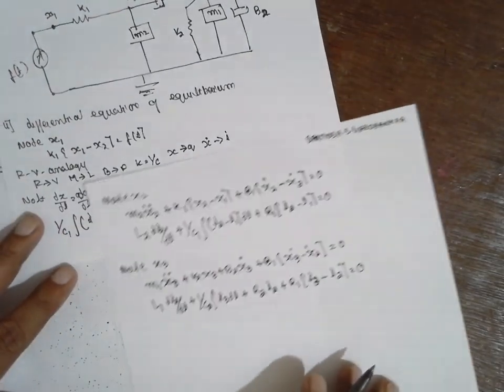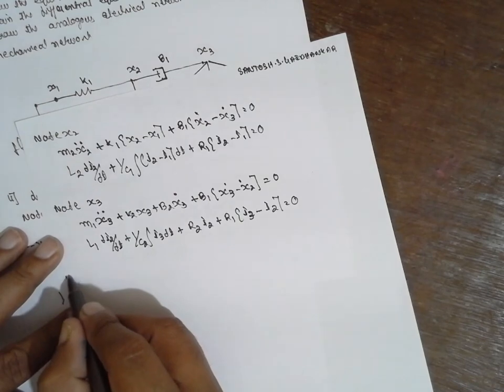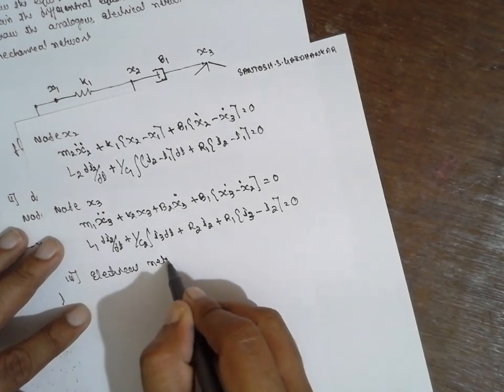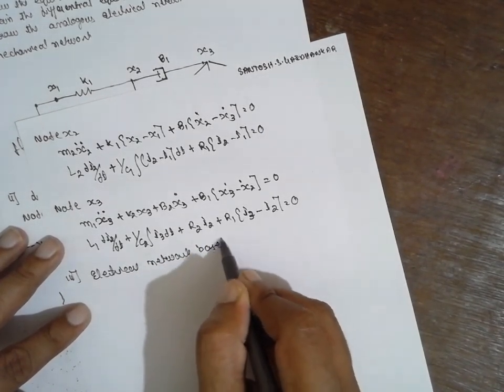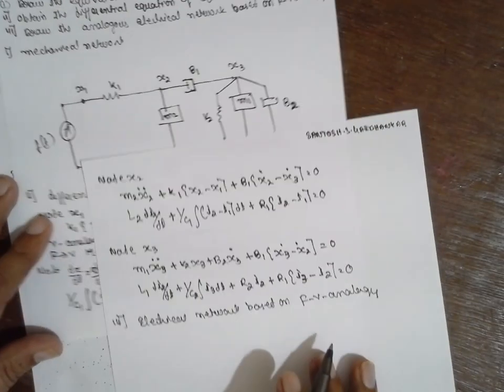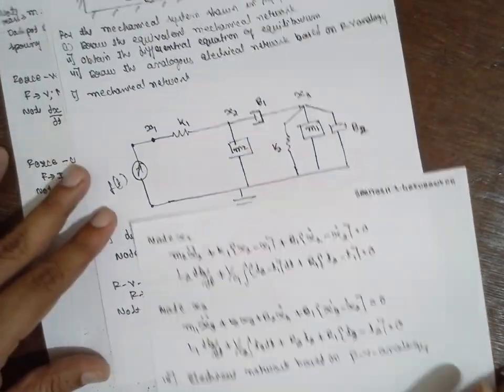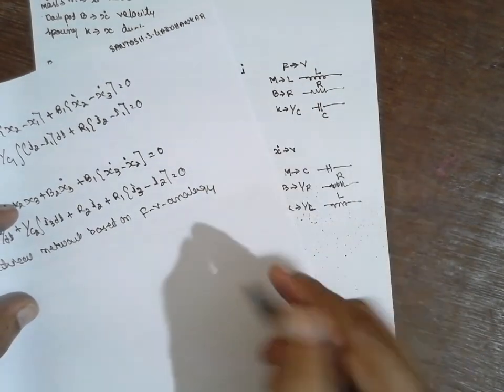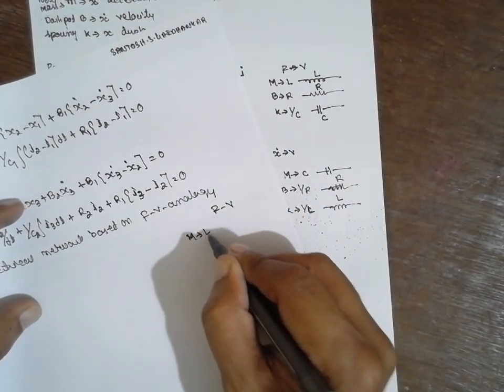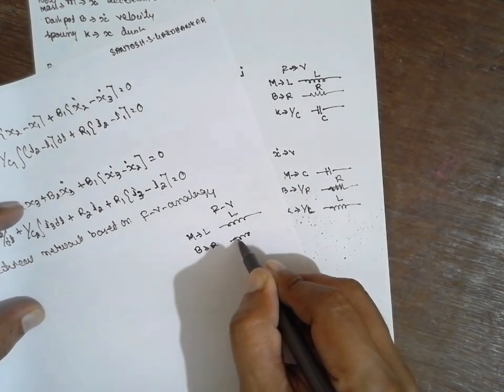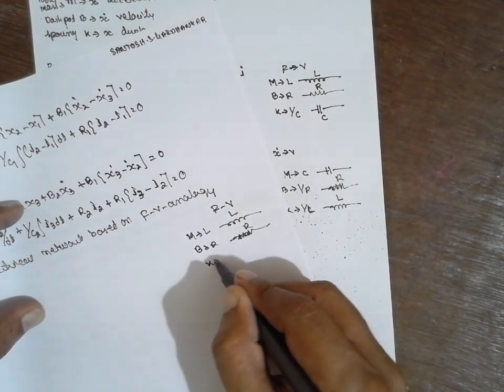Now we have to draw the electrical circuit diagram based on F analogy. That means whatever is vertical you have to make horizontal, and whatever is horizontal you have to make vertical. Force to voltage, M replace with L inductance, B with R resistance, K replace with 1 by C capacitance.